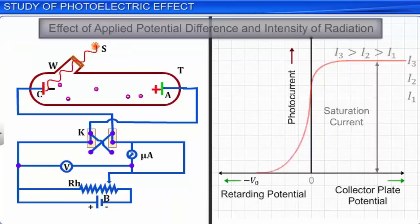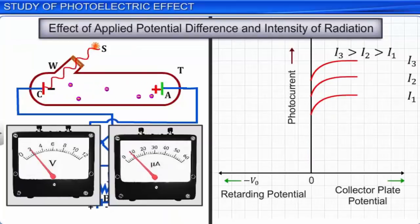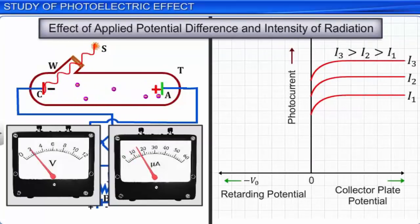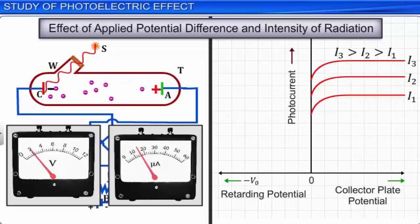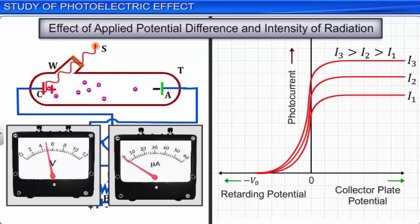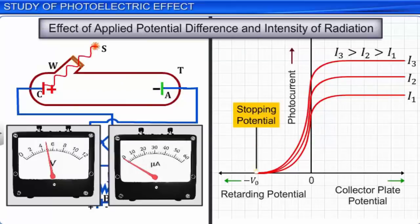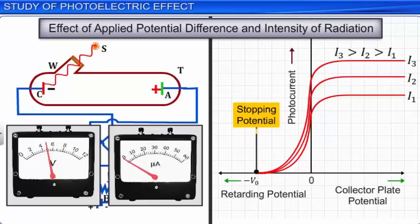For higher intensities of radiation with the same frequency, the saturation current increases, reinforcing the fact that the number of photoelectrons emitted increases with the intensity of the incident radiation. However, the stopping potential remains the same for all intensities of incident radiation of the same frequency. This proves that for a given frequency of incident radiation, stopping potential is independent of its intensity.